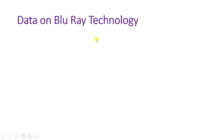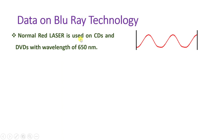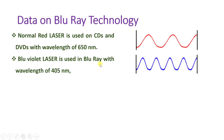Now let us look at data on Blu-ray technology. The normal red laser used in CDs and DVDs has a wavelength of around 650 nanometers. With Blu-ray technology, we use a wavelength of 405 nanometers, and the color of that wavelength is blue or violet. The basic agenda of Blu-ray technology is to reduce wavelength — reducing wavelength gives us advantages in writing data on discs.